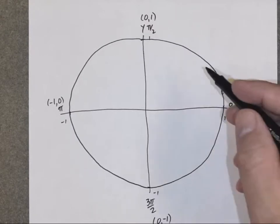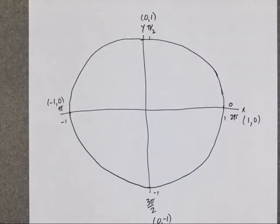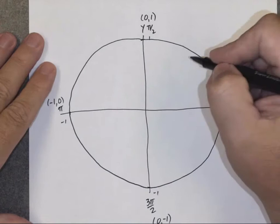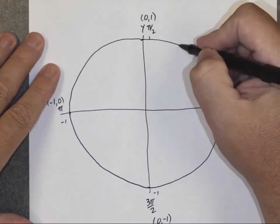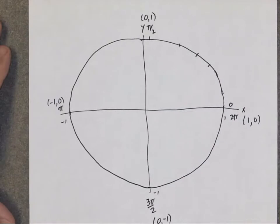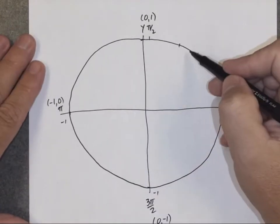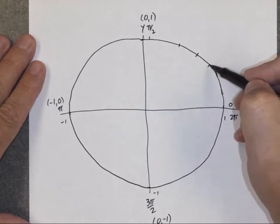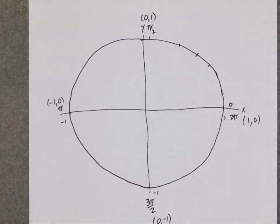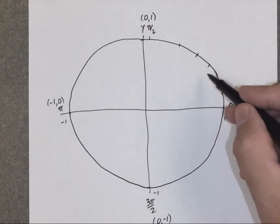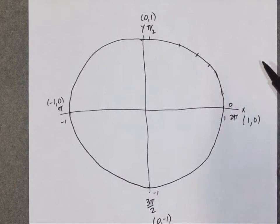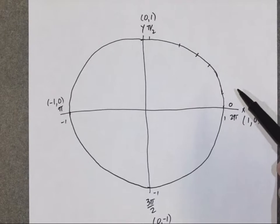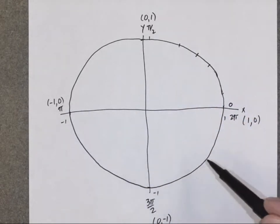Now in the first quadrant, each quadrant has three special angles: one right halfway between, and one on either side. Notice the middle one is halfway, but the other two points are actually closer to the midpoint. This is the stuff you have to memorize, but if you memorize the information for the first quadrant, then for the most part you don't have to memorize anything else to figure out the rest of the unit circle.